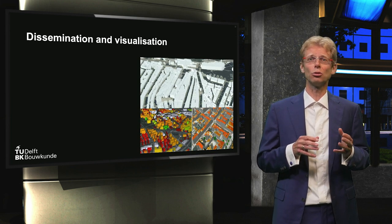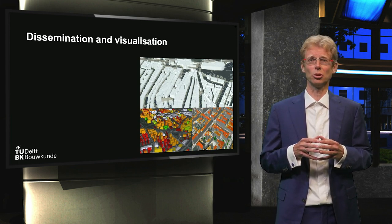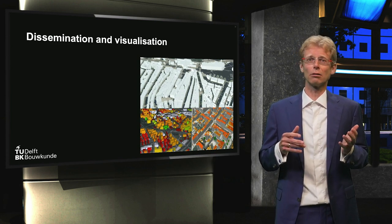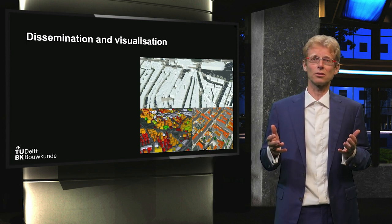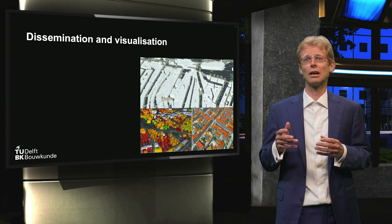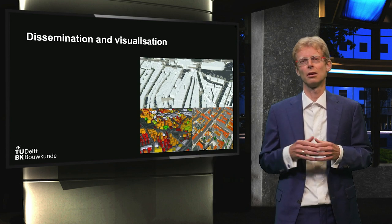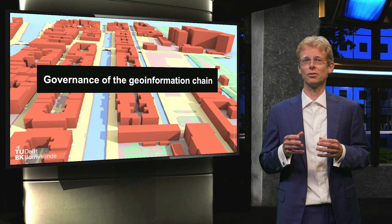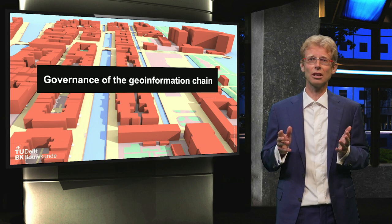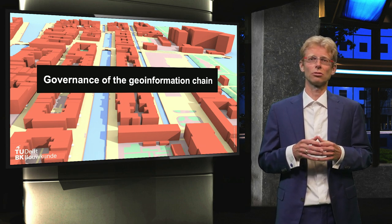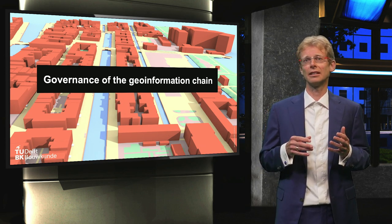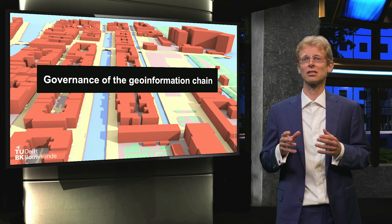Once the model has been created, you need to think about how you can visualize the buildings in the model and how and in what format users can obtain it — whether via a download service, an API, or another service. In addition to non-dynamic data such as the library's 3D model, we also teach you how to deal with real-time sensor data. A final step in the GeoInformation chain is the governance of the chain, where we pay attention to legal issues such as privacy and rights to access and use data, and to organizational issues such as how to prevent the same data from being collected twice and how to ensure that collected data can be directly used in an existing GIS system.